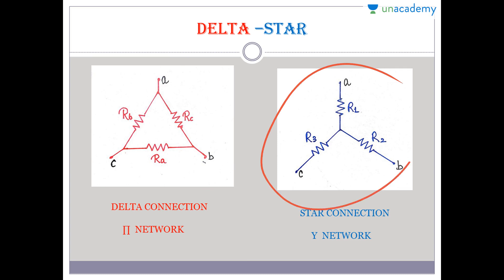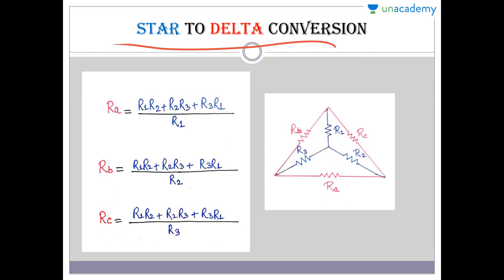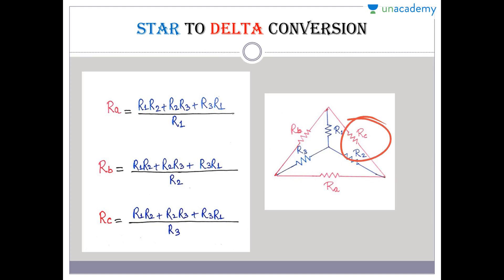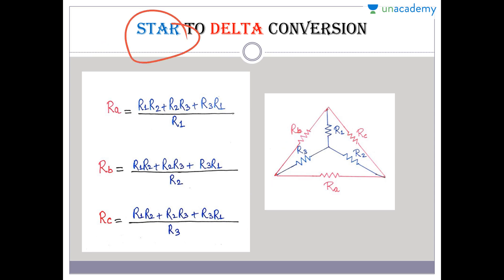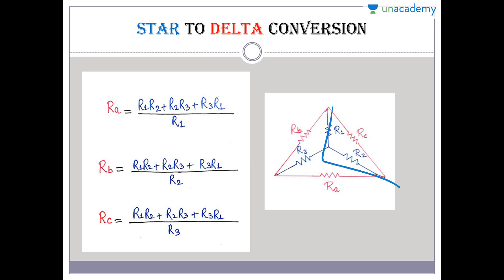I hope you can easily differentiate between delta and star connections. Now, the red color shows a delta connection having resistances R_A, R_B, and R_C, and the blue color shows a star connection with R1, R2, and R3. So you can identify: the star connection is given in blue and we have to convert it into the delta connection shown in red.